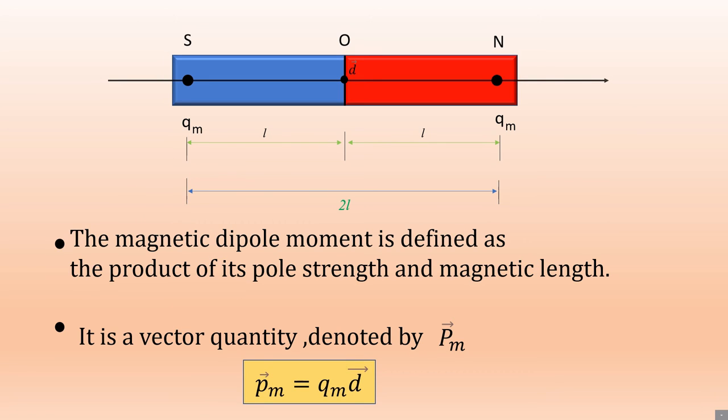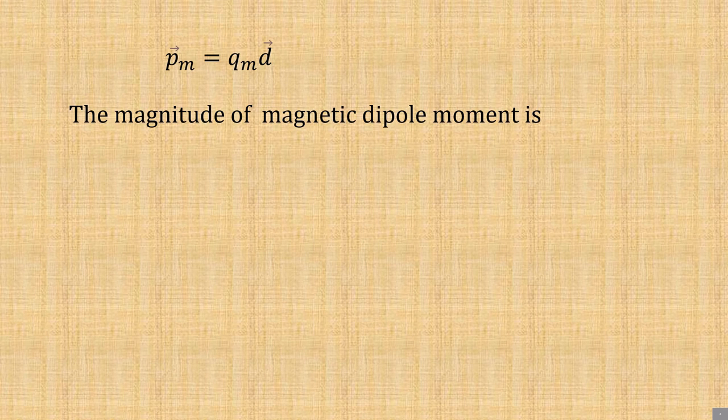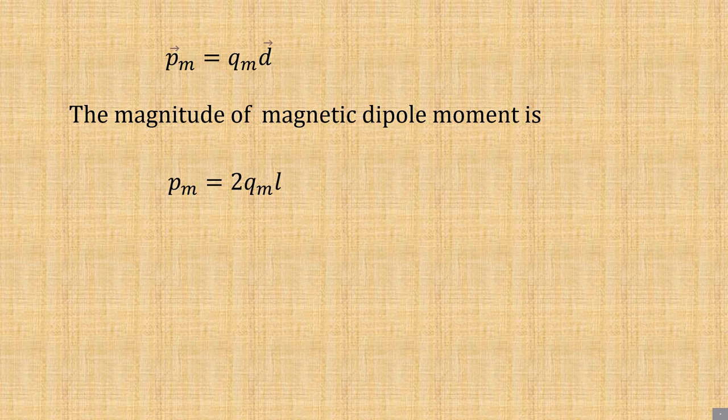Denoted by vector Pm, so we have vector Pm equals Qm d vector. The magnitude of magnetic dipole moment is Pm equals Qm times l.